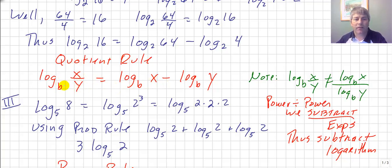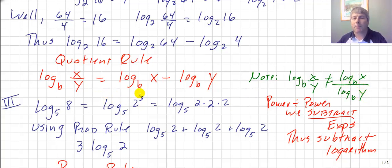This works only if we have the same base, just like the product rule — the base had to be the same. Be careful: log base b of x divided by y is NOT log base b of x divided by log base b of y. It's log base b of x minus log base b of y. We subtract the logarithms, not divide them.